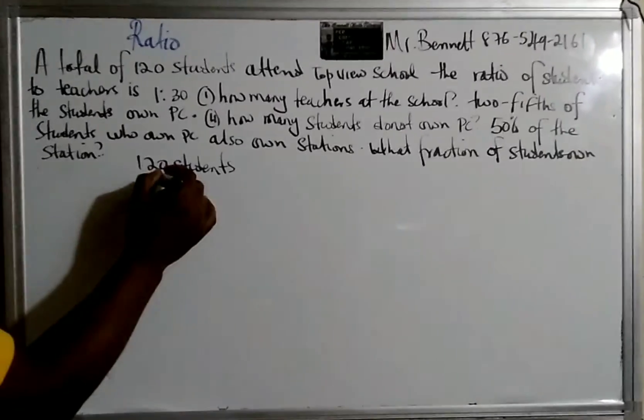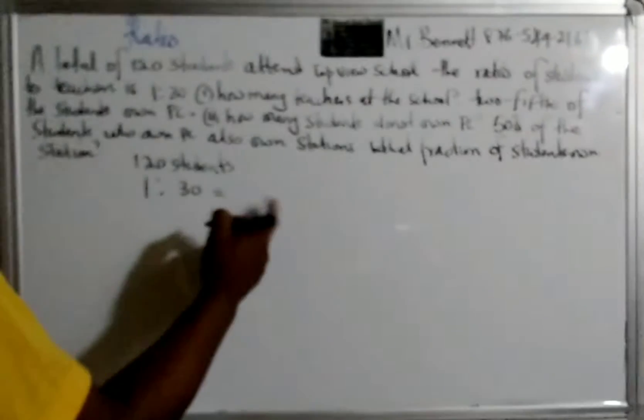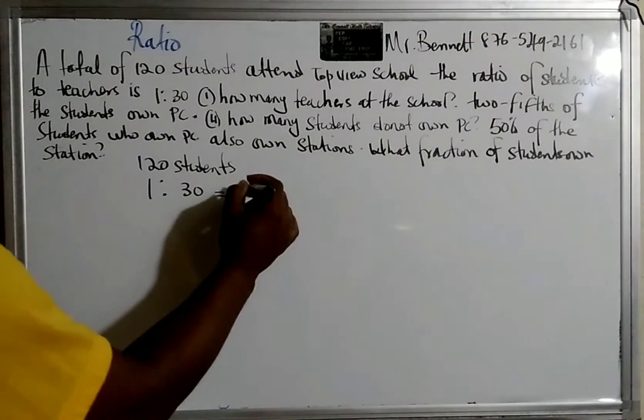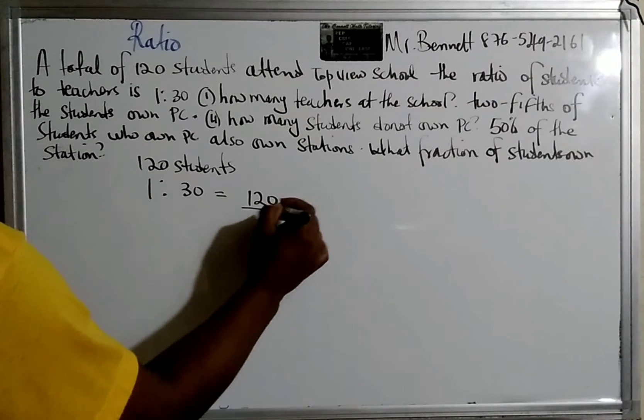What this means is for every one teacher you get 30 students, right? This is almost as if we are saying 30 students per class. That's what it's actually saying. So what we do, we just divide by 30.